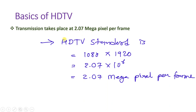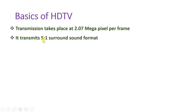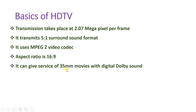This is called 1080p, where p stands for progressive scanning. With HDTV, it transmits 5.1 surround sound format, and it uses MPEG-2 video codec for compression of video. The aspect ratio is 16:9 with HDTV. It can also provide service of 35mm movies with Dolby Digital sound. So the key basics of HDTV are: a data rate of 2.07 megapixels per frame, 5.1 surround sound, MPEG-2 video codec, 16:9 aspect ratio, and 35mm movies with Dolby Digital sound.